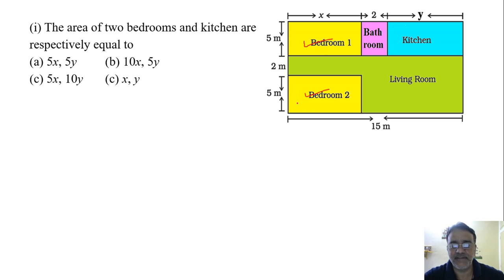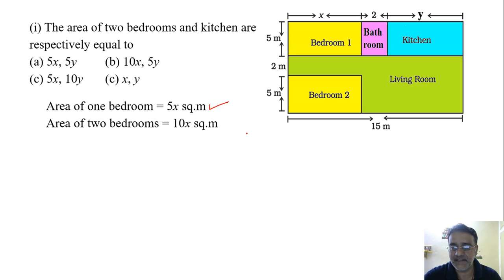And bedroom 2 is also 5x. So the area of two bedrooms together is 10x. And here 10x option is there, that is B1. So immediately you check for the kitchen also. From here to here y is there and this side is 5. That means the area of kitchen is 5y. So which is the correct option? Option B. So area of one bedroom is 5x square meter. Area of two bedrooms will be 10x square meter and area of kitchen will be 5y square meter. So correct option is B.